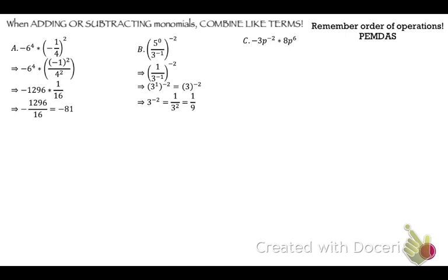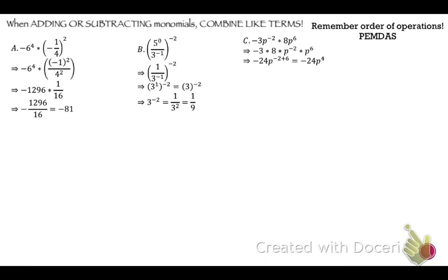Now we're getting some variables in there. So negative 3p to the negative 2nd times 8p to the 6th. Let's rearrange so that numbers are next to each other and variables are next to each other: negative 3 times 8 times p to the negative 2nd times p to the 6th. Negative 3 times 8 is negative 24. Multiplication goes with addition, so that's p to the negative 2 plus 6, giving us negative 24p to the 4th.